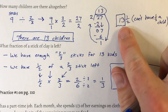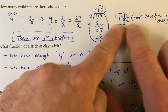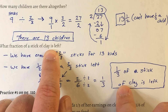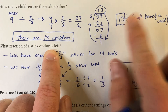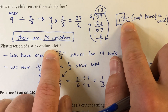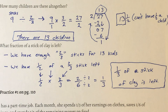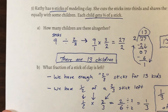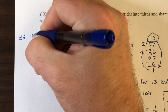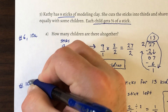Always think about what your answer represents — the 13 and 1/2 represents children, not actual clay. When the question asks for the fraction of clay left, you must find half of a 2/3 stick, not just state 1/2. Part A helps specifically with numbers 6 and 10A, and Part B helps specifically with number 10B in the Math in Focus textbook.